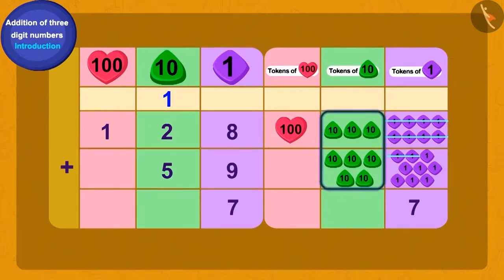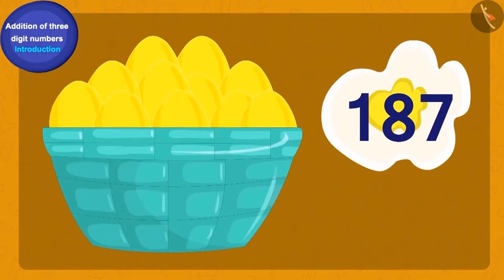How many tens tokens do we have now? Eight. Now what shall we do in the end? Yes, we would write one as the total number of tokens of hundred. Oh, wow! Baban now had a total of one hundred and eighty-seven gold eggs.